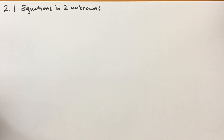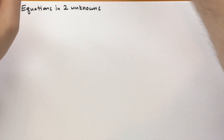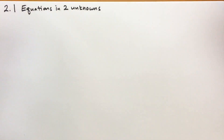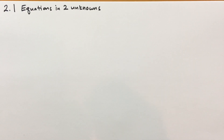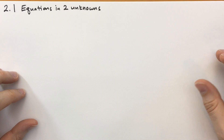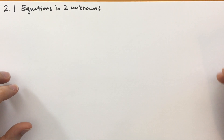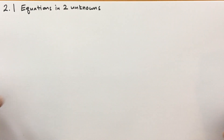Hello everybody, welcome back. This is Jonathan Gardner. Today we're covering Chapter 2, Section 1 of Basic Mathematics by Sergey Lang. We're going to learn how to solve two equations at the same time. With two equations, you should be able to solve two variables. Here's how you do that — I'm going to show you by example.